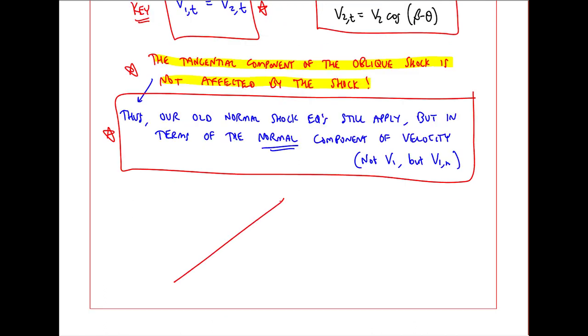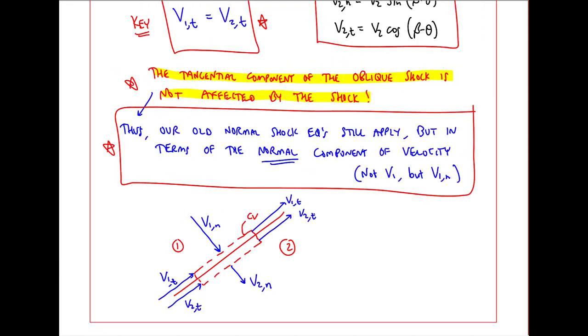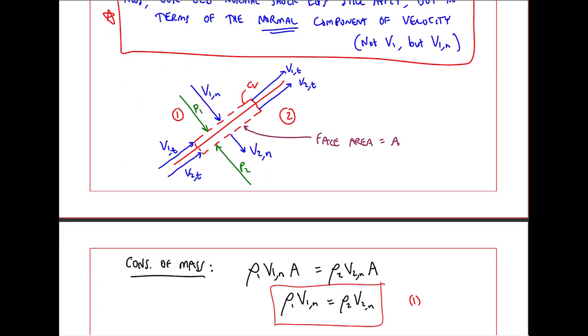I'll illustrate with a small control volume. Here's our oblique shock from 1 to 2. And here's a slice of a control volume across the shock. V1N is the normal component coming into the control volume. And V2N is the normal component coming out. But V1T and V2T are the same. And they move parallel to the shock into the control volume and don't change. Therefore, the same flow comes out the control volume. Let's define this face area as A. Now we can write our conservation equations. Conservation of mass on this control volume gives us rho 1 V1N A through this normal component. The normal component at the inlet equal rho 2 V2N A at the outlet in the normal direction. In the tangential direction, the same flow comes in as comes out. And since the area is the same, we have rho 1 V1N equal rho 2 V2N, which I'll call equation 1.